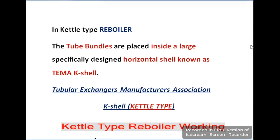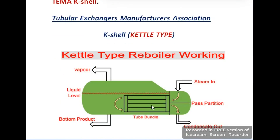In the kettle type re-boiler, tube bundles are placed in a large horizontal shell known as the TEMA K shell. TEMA is the abbreviation of Tubular Exchanger Manufacturing Association, and K shell refers to the kettle design. Here you can see the tube bundle fitted in a large horizontal K shell.